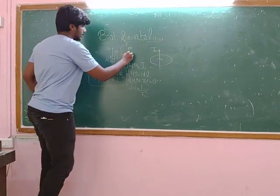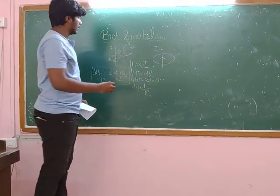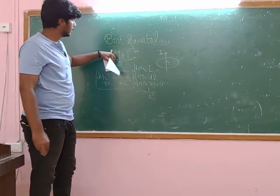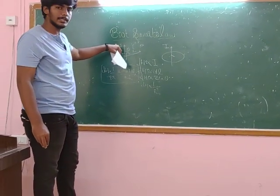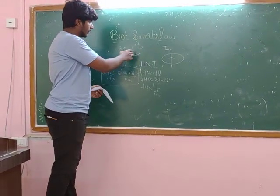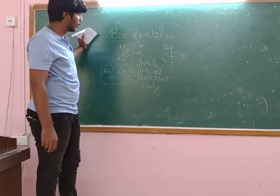The direction is determined by the right-hand thumb rule. The thumb's direction is the current direction, and the fingers rotate around. This is basically normal to the plane, which is our blackboard right now.